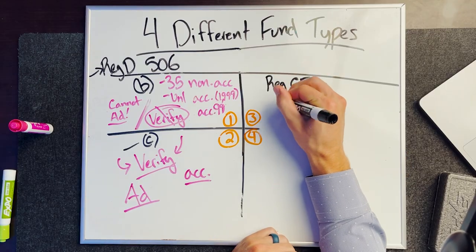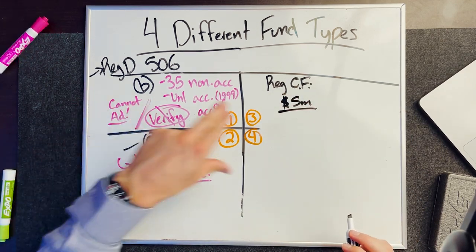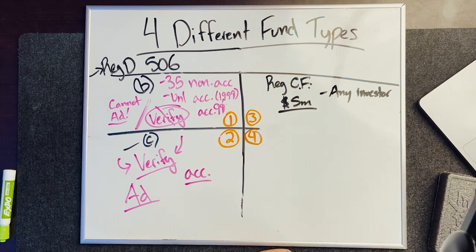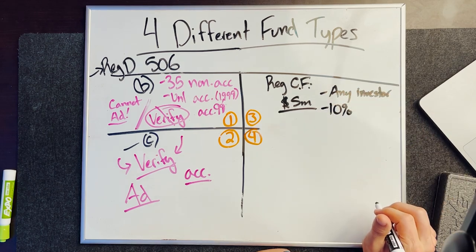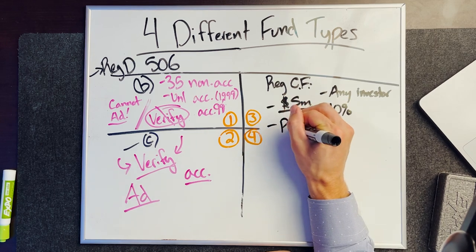Reg CF — Regulation Crowdfunding — is capped at $5 million to raise. Over here in Reg D, you can raise unlimited amounts, but Reg CF caps you at $5 million. You can raise from any investor; however, non-accredited investors can only invest 10% of their net worth or annual earnings. So if someone has a net worth of $100,000, the most they can invest is $10,000.